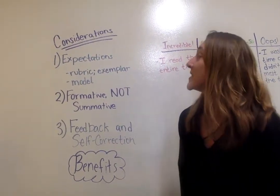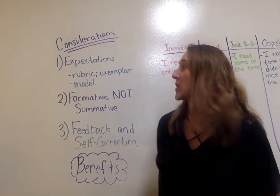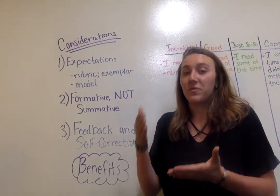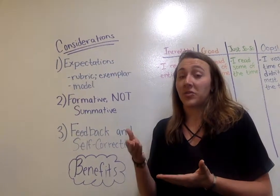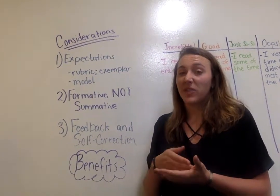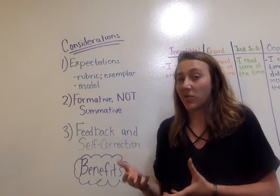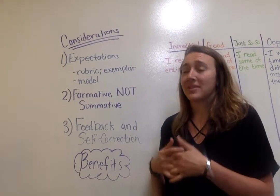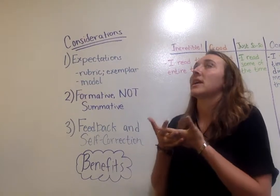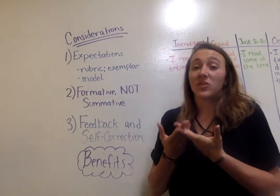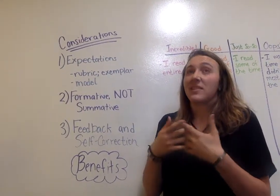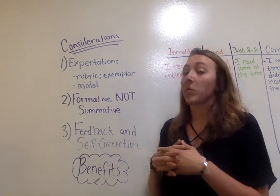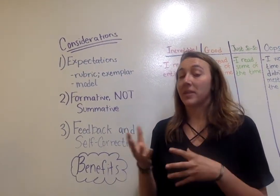A couple of things that teachers need to keep in mind with student self-assessment are, firstly, expectations. Students need to be very aware of what the success criteria are for an assignment. If they're ready to be given autonomy and authority over assessing their work, they need to know how to apply those criteria. Students must be able to describe what a successful example of that assignment looks like in detail, and that can be accomplished either through providing students with a rubric, an exemplar, or some combination of both.